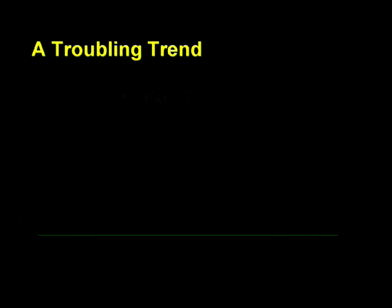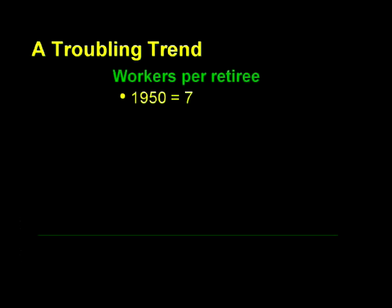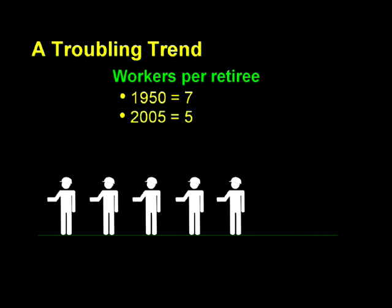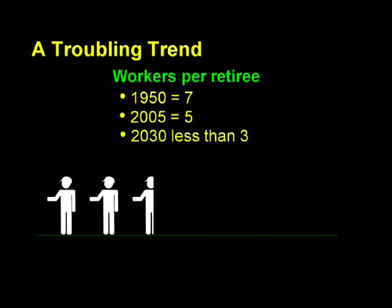Recall that the U.S. government has not saved in any of its entitlement programs, and that it has a massive shortfall in them measuring the tens of trillions of dollars. That situation comes about because the entitlement programs are really wealth transfer programs, not savings accounts, and so they depend on a significant surplus of current workers to retirees. In 1950, there were seven workers per retiree and the system was balanced. By 2005, that ratio had dropped to only 5 to 1, and the system was already exhibiting signs of distress. By 2030, that ratio will have plummeted to a thoroughly unworkable value of less than 3 to 1.